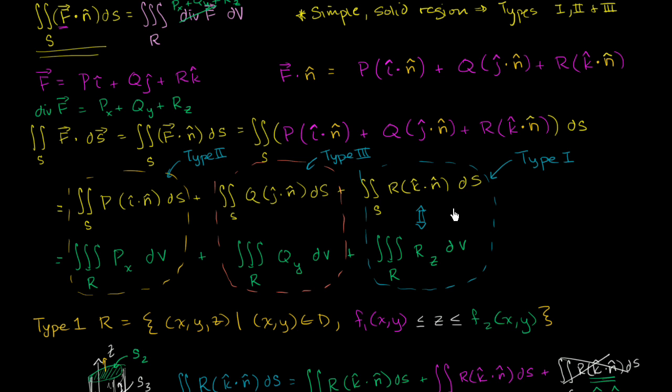What I said is that we're going to use the fact that this is a type 1 region to prove this part, the fact that it's a type 2 region to prove this part, and the fact that it's a type 3 region to prove this part. In particular, I'm going to show that if it is a type 1 region, we can prove this. You can use the exact same argument to prove the other two, in which case the divergence theorem would be correct.